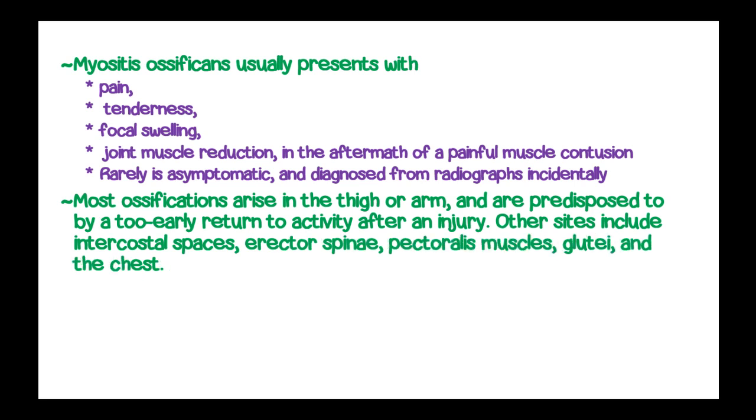Other sites of ossification include the intercostal spaces, erector spinae, pectoralis muscles, gluteal muscles, and the chest.